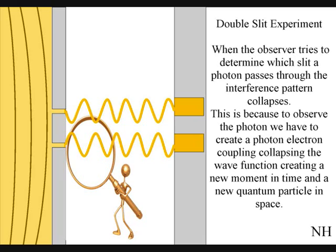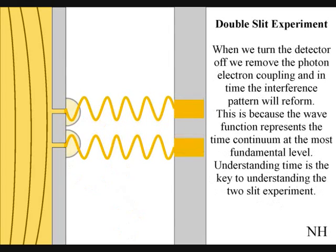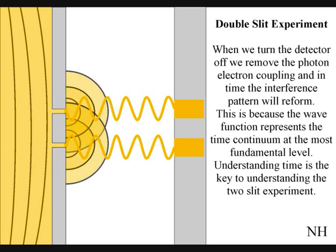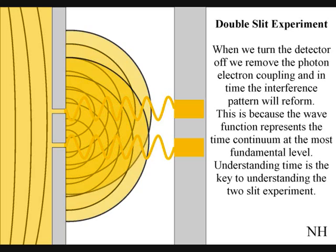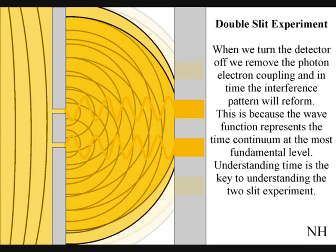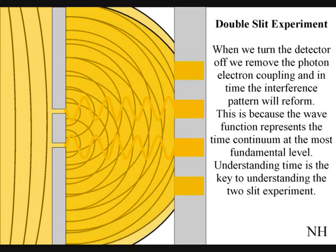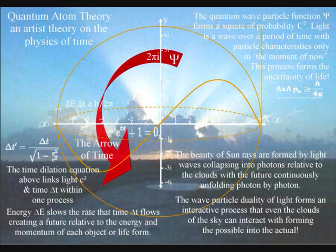If the observer turns off the electronic detector, the interference pattern will reform over a period of time photon by photon. In this theory we have a universal interactive process; the same interference pattern can be seen when sunlight breaks through clouds, forming rays of sunlight.